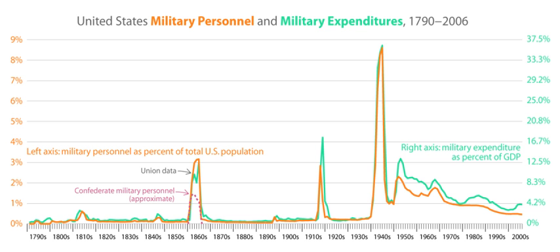Washington drove the British out of Boston but in late summer 1776 they returned to New York and nearly captured his army. Meanwhile, the revolutionaries expelled British officials from the Thirteen States and declared themselves an independent nation on 4 July 1776. The British lacked both a unified command and a clear strategy for winning. With the use of the Royal Navy, the British were able to capture coastal cities, but control of the countryside eluded them.